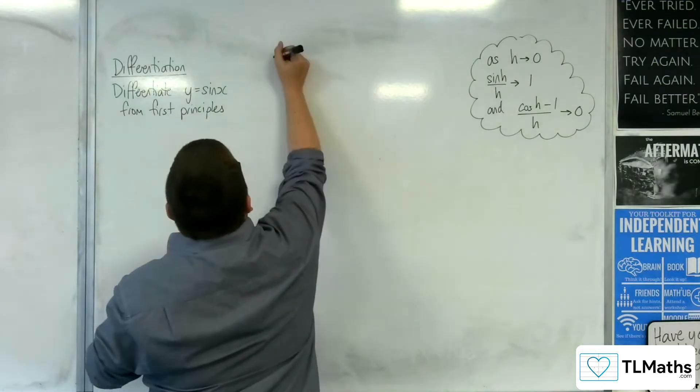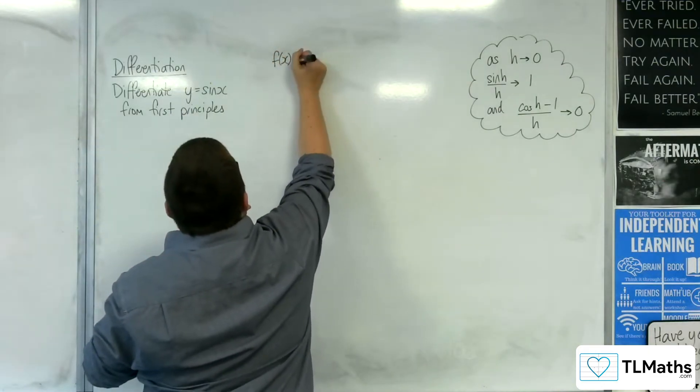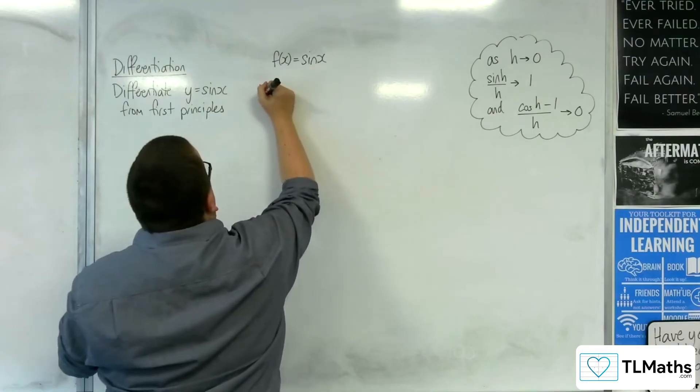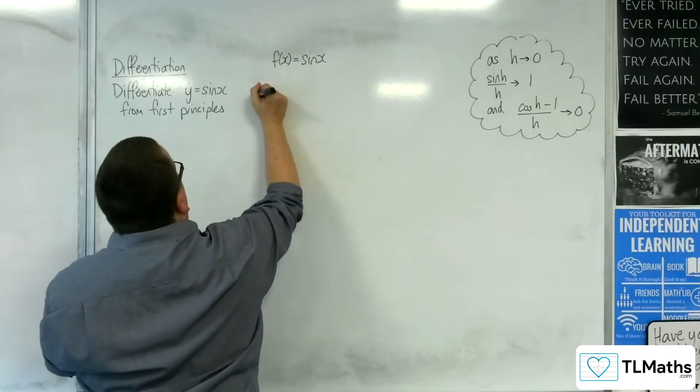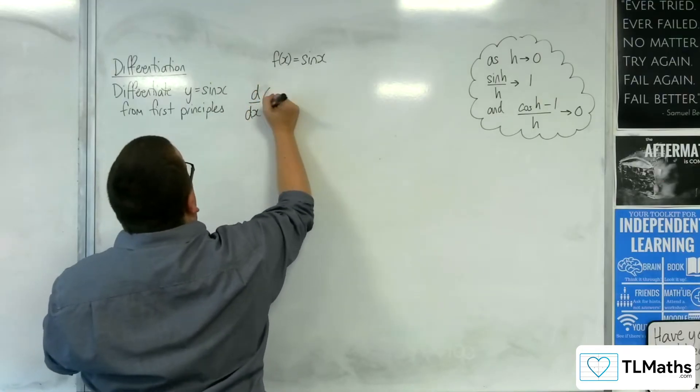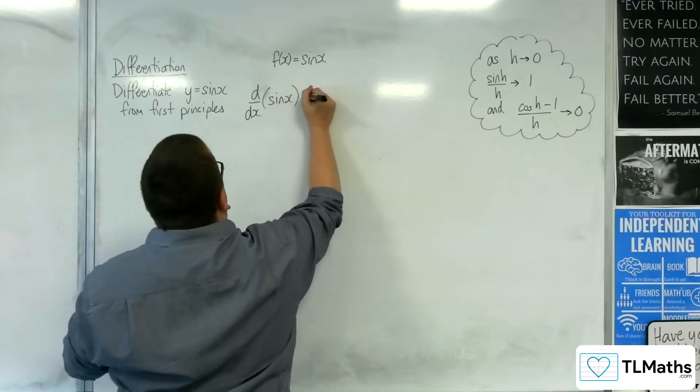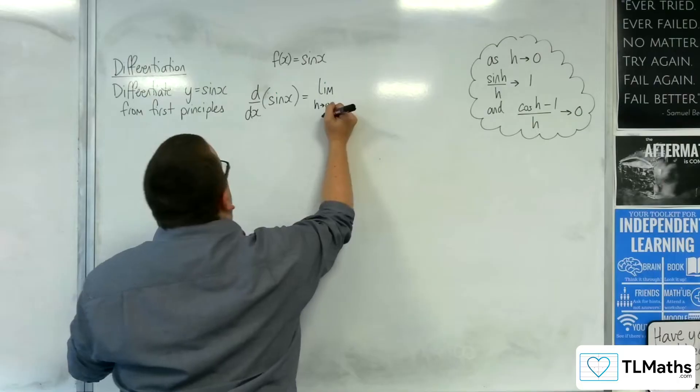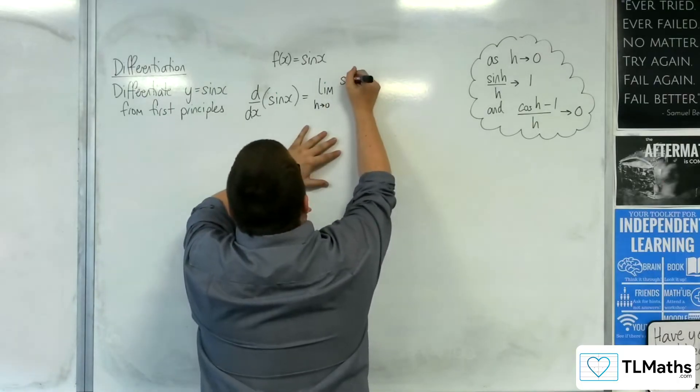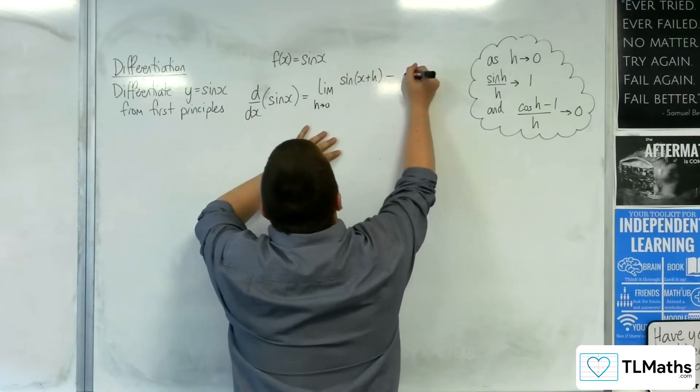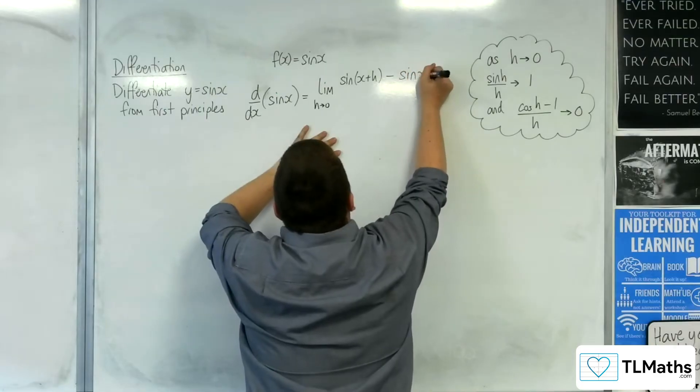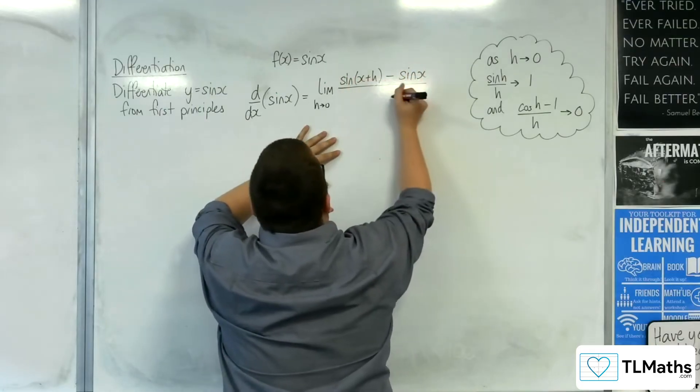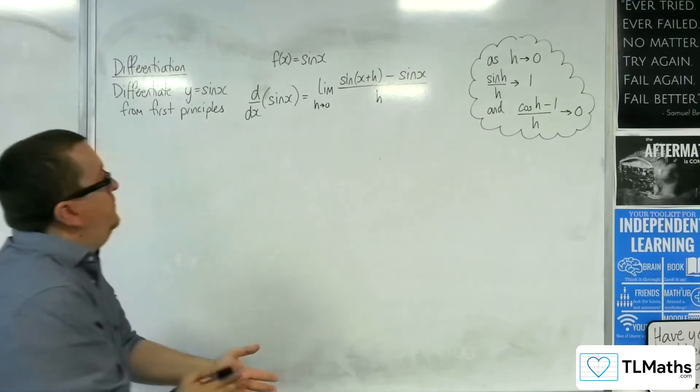So y equals sine x, so f of x is equal to sine x. The limit, or rather, d by dx of sine x is equal to the limit as h tends to 0 of f of x plus h, so sine of x plus h, take away f of x, so take away sine of x, all over h.